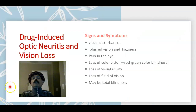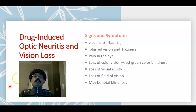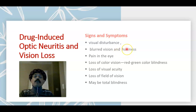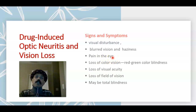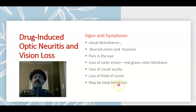The signs and symptoms of drug-induced optic neuritis and vision loss include visual disturbance, blurred vision, and haziness. The patient may complain of seeing a snowstorm effect, pain in the eye — especially retrobulbar pain — and loss of color vision, including red-green color blindness. There is also loss of visual acuity, loss of visual field, and potentially total blindness. Vision loss may be reversible, but with continued toxicity there may be partial or total permanent blindness.